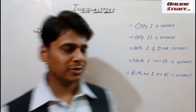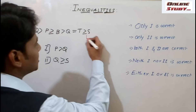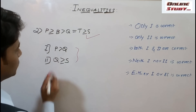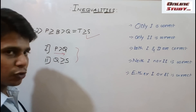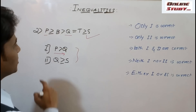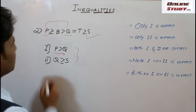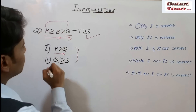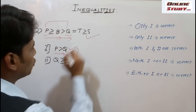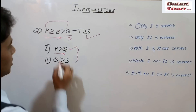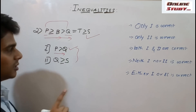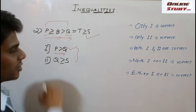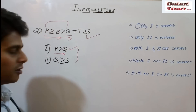Now let us take the next question. The statement and both conclusions are given. In the first conclusion, they have given P is greater than Q — we need to move from P to Q. P is here and Q is here. From P to B, yes, it is possible because the gate is open. From B to Q, yes, it is possible. So this conclusion is true. As per the rules, if a greater than symbol is given, we can travel through both greater than or equal to and greater than symbols.